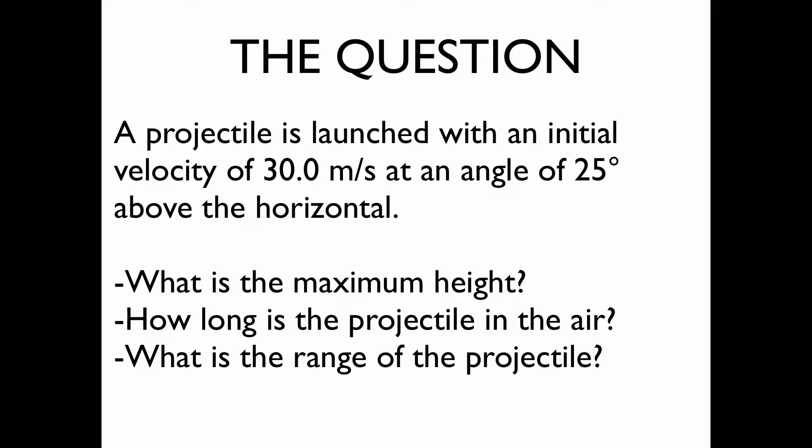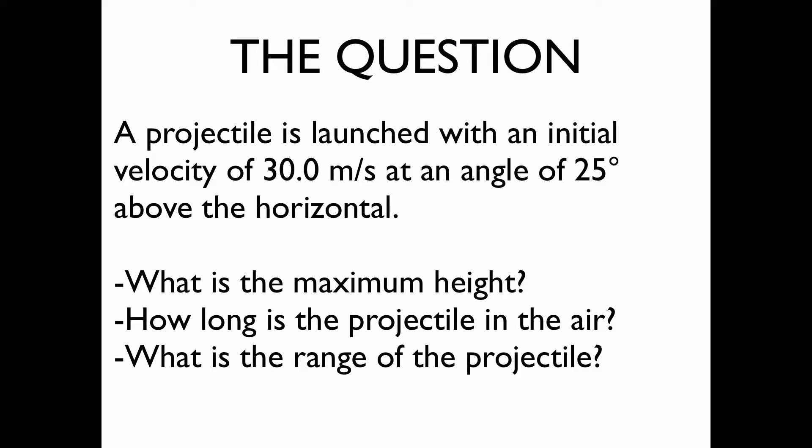The question: We have a projectile which is launched with an initial velocity of 30 meters per second at an angle of 25 degrees above the horizontal, and we would like to find the projectile's maximum height, the duration of the projectile's flight, and the range of the projectile—that is, how far the projectile travels before coming into contact with the ground.